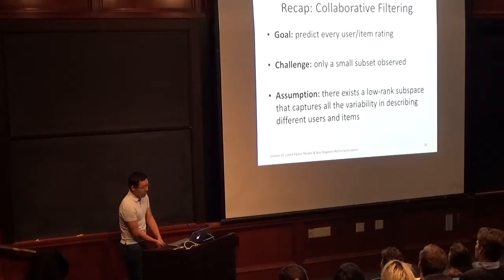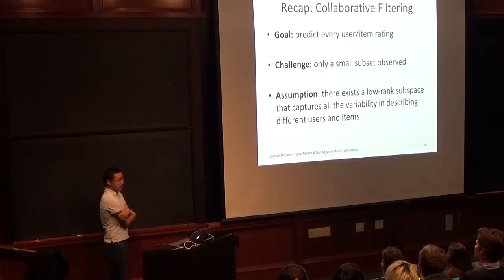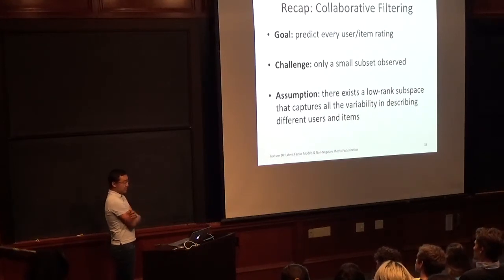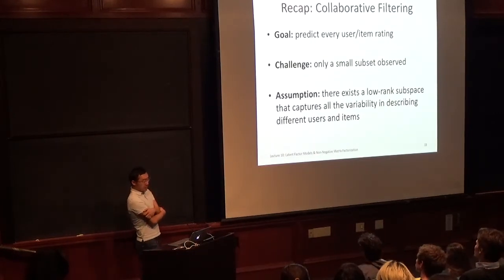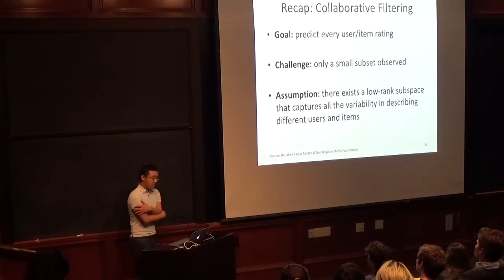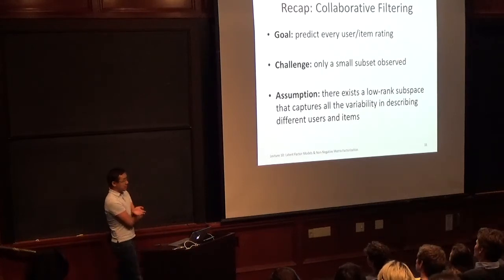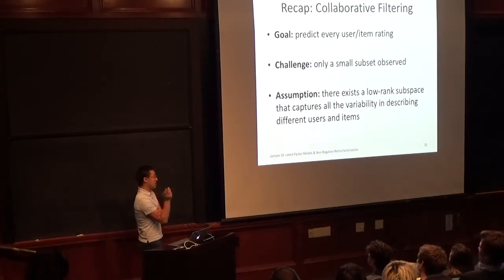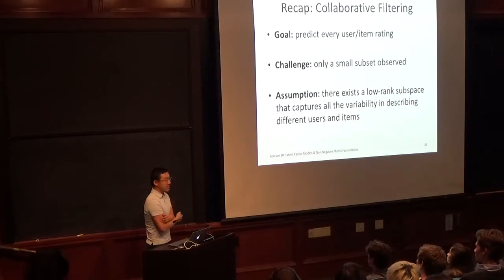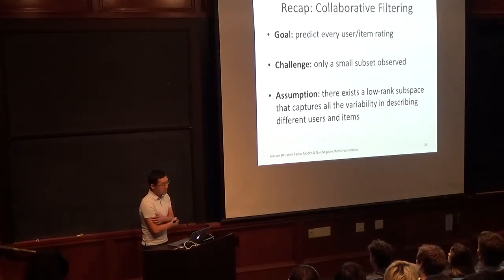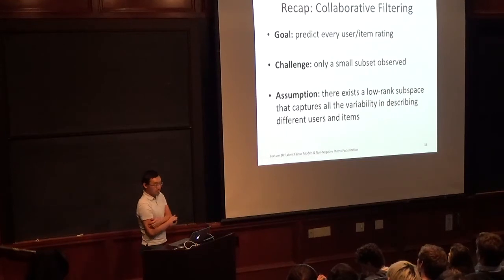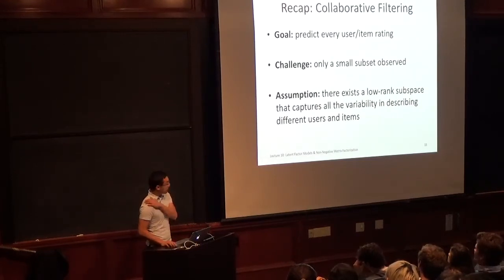To recap collaborative filtering: the goal is to predict every user–item rating, the challenge is that only a small subset are observed, and the assumption is that a low-rank subspace captures most of the variability explaining why different users prefer different things. If the subspace is one-dimensional, everyone likes and dislikes the same stuff.